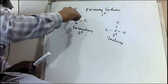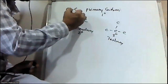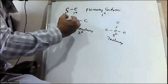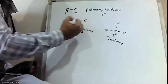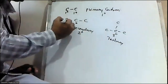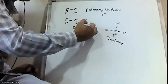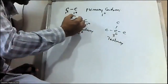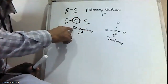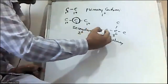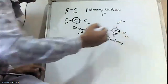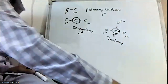For example, in this case both these carbons are primary carbons because each is attached to only one carbon. There are two primary carbons. But here, this carbon is attached to two other carbons, that's why it is called secondary carbon. In another example, there are three primary carbons and one tertiary carbon.